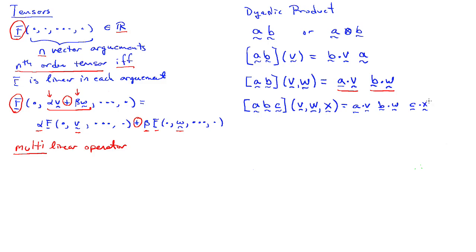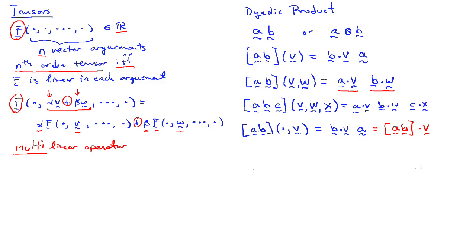Often when we work with higher-order tensors, they don't act on the same number of vectors as the order of the tensor, and that's okay. Suppose I have a, b acting on just one vector, leaving the first argument open. You apply the rule in the arguments where you have something, and leave the rest alone. So this gives b dot v — which is a number — times the vector a. The alternate way of writing this is a, b dot v.